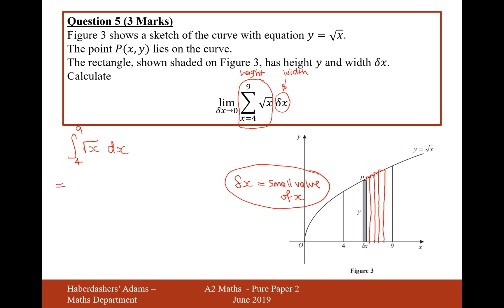Let's now do the integration. Let's first go from 9 to 4 of x to the half, dx. Increase the power by 1, divide by the new power. So it's x to the power of 3 over 2, divide by the new power, 2 over 3, in between the boundary of 9 to 4.